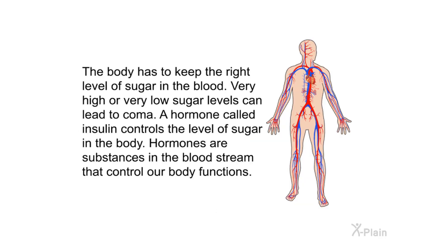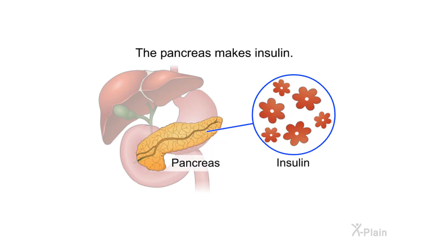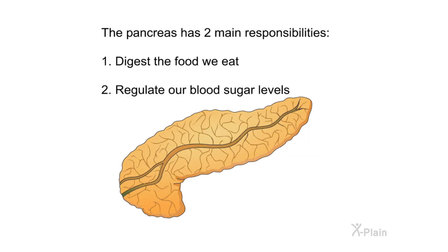In the intestines, digested food is absorbed into the bloodstream. The body has to keep the right level of sugar in the blood — very high or very low sugar levels can lead to coma. A hormone called insulin controls the level of sugar in the body. Hormones are substances in the bloodstream that control our body functions. The pancreas makes insulin and has two main responsibilities: to digest the food we eat, and to regulate our blood sugar levels.